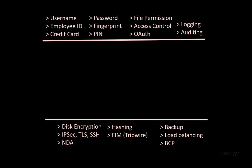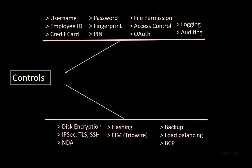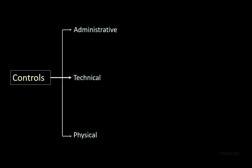All these examples that we have seen are called controls or safeguards. We can divide or categorize these controls into three types: administrative, technical, and physical.